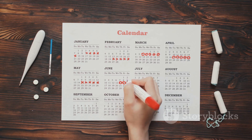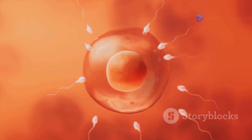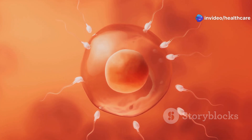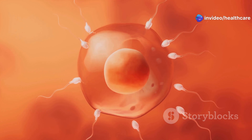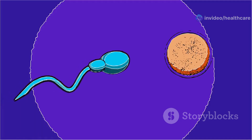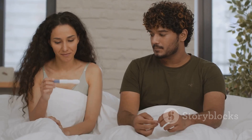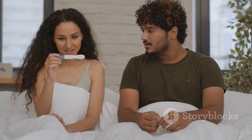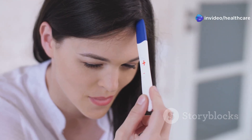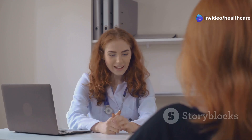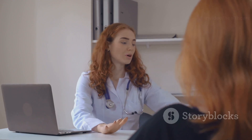The fertile window is when you're most likely to conceive. It typically spans about six days — the five days leading up to ovulation and the day of ovulation itself. During this time, the chances of sperm meeting the egg are at their highest. If you're trying to conceive, this is the time to focus on. Track your cycle closely to identify these key days, as every woman's cycle is unique.